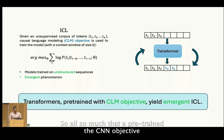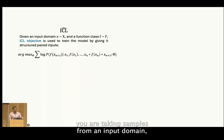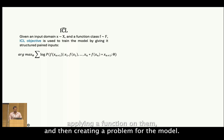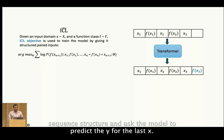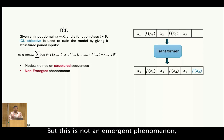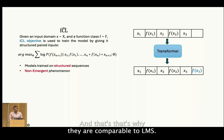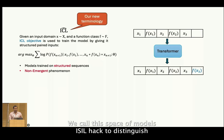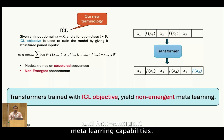Transformers pre-trained with the CLM objective yield emergent ICL. On the other hand, when you train a model using the ICL objective, you take samples from an input domain, apply a function on them, and create a prompt — filling the input window with an X-Y pair sequence structure and asking the model to predict Y for the last X. This trains the model to always expect this structure in the input, so it learns to meta-learn the exhibited function F. But this is not an emergent phenomenon — these models have hard-coded understanding of the ICL structure, and that's why they are incomparable to LLMs. We call this space of models ICL-hat to distinguish it from ICL models. Transformers trained with the ICL objective yield non-emergent meta-learning capabilities.